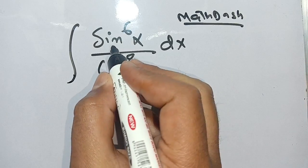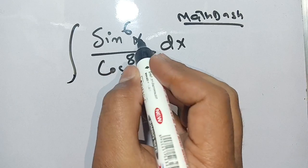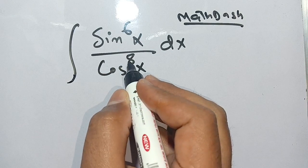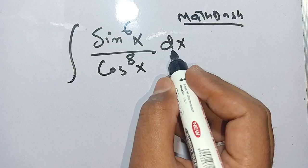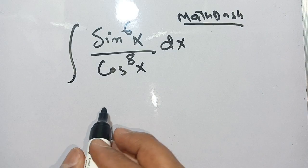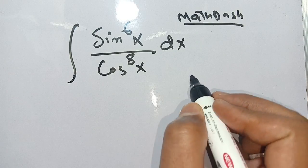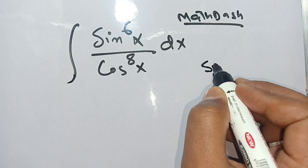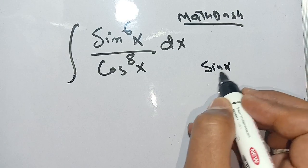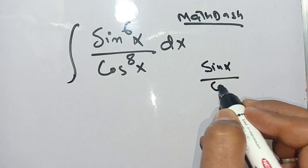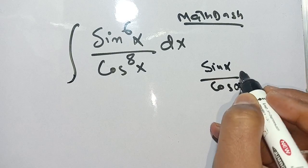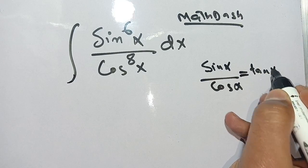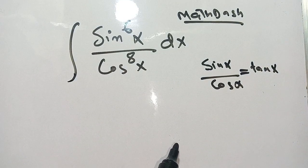Hello everyone. How to solve the integration of sin⁶(x) divided by cos⁸(x) dx. We know that sin(x) divided by cos(x) is equal to tan(x).